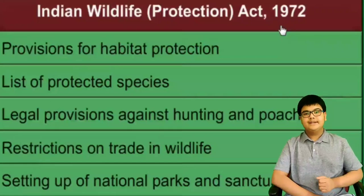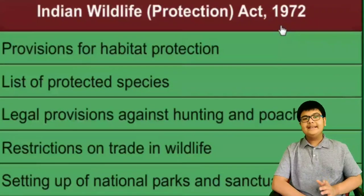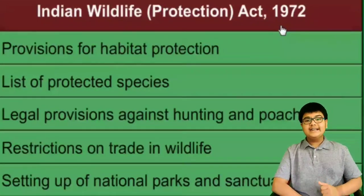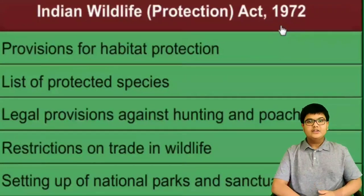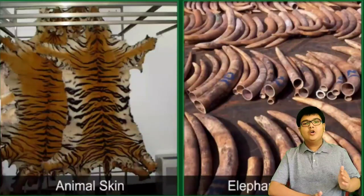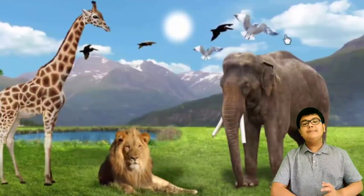Third, protecting the remaining population of endangered species by banning hunting and giving legal protection to the habitats of these species. Fourth, restricting trade in wildlife — the buying and selling of wild animals or their body parts such as claws and horns was banned by the government.